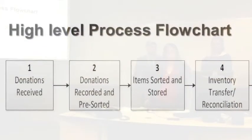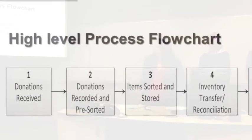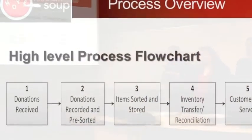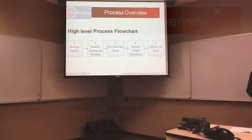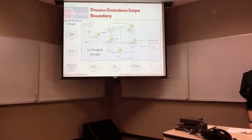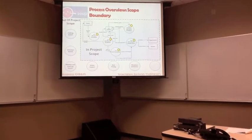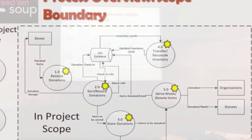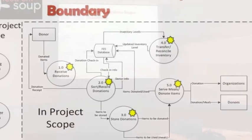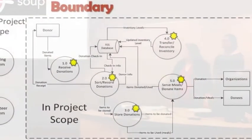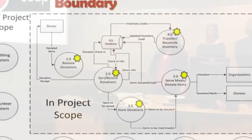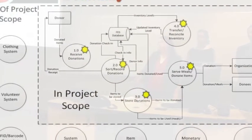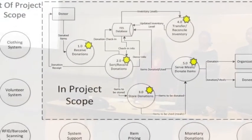This is our proposed high-level diagram for the new system. We added steps 2 and 4 in order to increase inventory accuracy. Here is our scope boundary diagram. The inside of the dotted line is our high-level diagram and how it will interact with the system and the external entities. Outside in the circles are items that we felt could be extensions to the system but were not in the scope of our project.